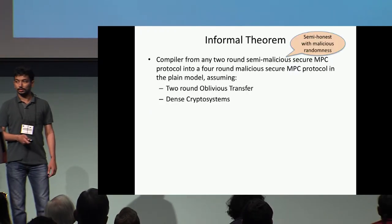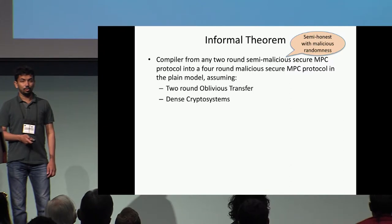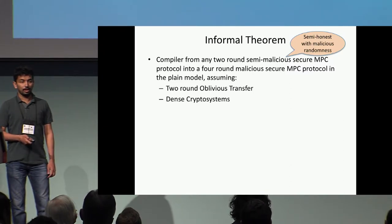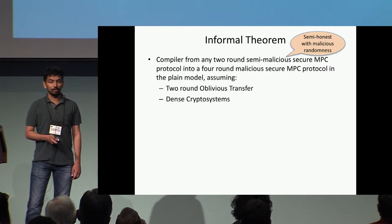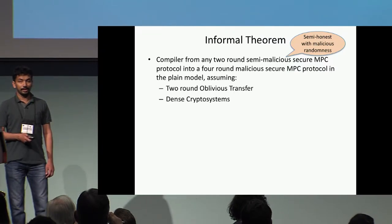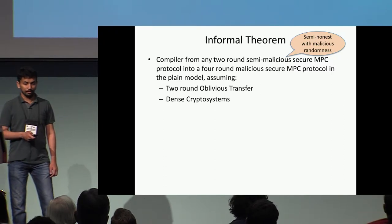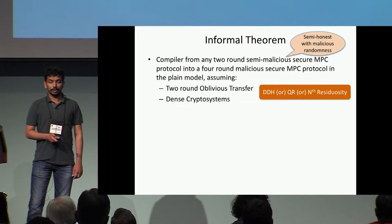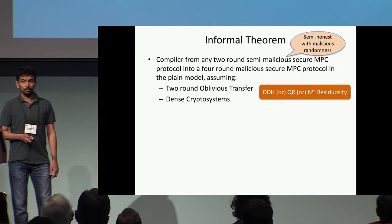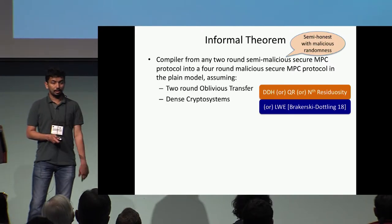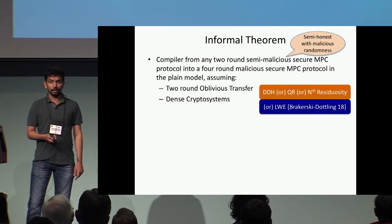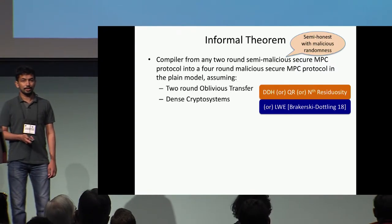We answer this question in the affirmative. We build a compiler that takes any two-round semi-malicious secure MPC protocol and transforms it into a four-round malicious secure MPC protocol, assuming only two-round oblivious transfer and dense cryptosystems. All these primitives, including two-round semi-malicious MPC, can be instantiated from DDH alone, quadratic residuosity alone, or the nth residuosity assumption alone. And in a subsequent work by Brackersky and Dartlink, it was shown these primitives can also be instantiated from LWE alone.